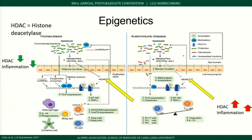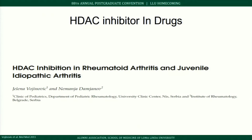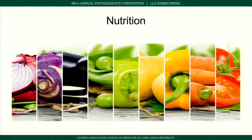In autoimmune disease, gut dysbiosis, insufficient dietary fiber, and decreased barrier function increase HDAC activity, leading to increased inflammation. Medications that block HDAC have been studied in rheumatology and found to decrease rheumatoid arthritis activity. Interestingly, certain fruits and vegetables can naturally block HDAC through their phytonutrients.